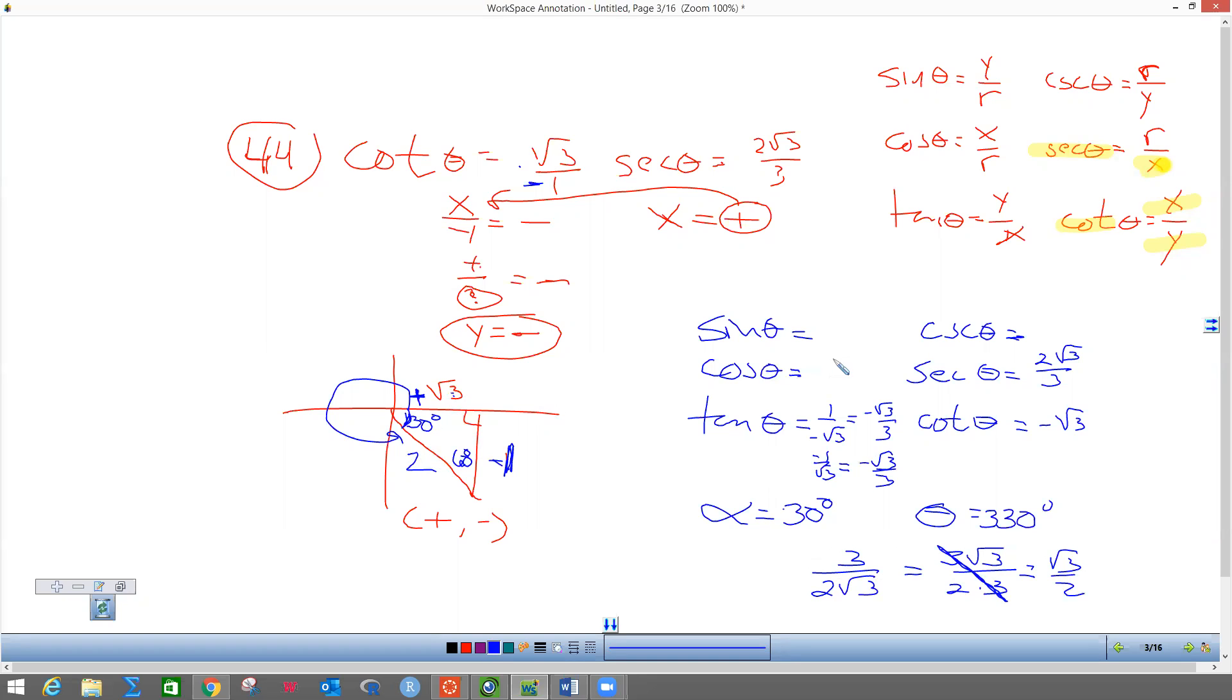And then sine is opposite over adjacent, so this should be negative 1 over 2. You flip that upside down, and cosecant is negative 2. Pretty hard stuff. Anybody else got any questions on anything?